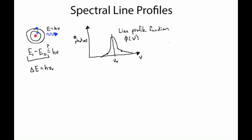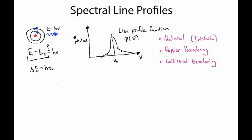So what we're going to talk about today are the different mechanisms that give rise to this line profile function phi. There are basically three different reasons why photons arising from a transition in an atom will show up at a frequency other than the average center frequency: natural line broadening, which is the intrinsic width of that line; Doppler broadening, caused by the motion of atoms relative to the observer's frame; and collisional broadening. Even though it's the hardest to understand, let's start with natural broadening.